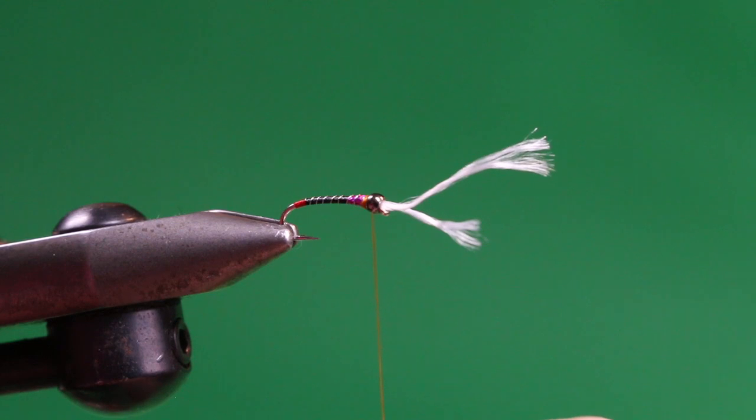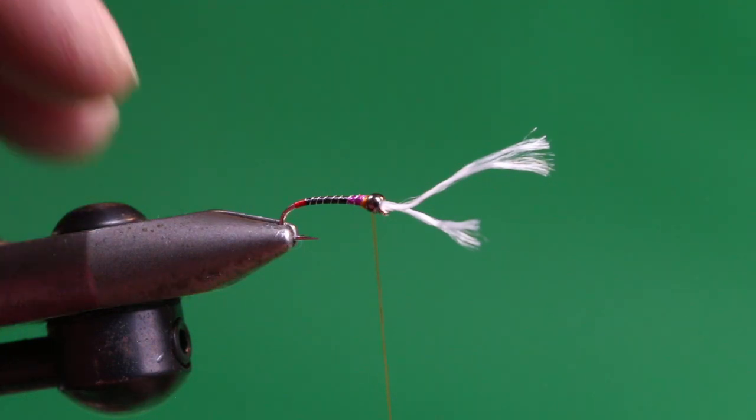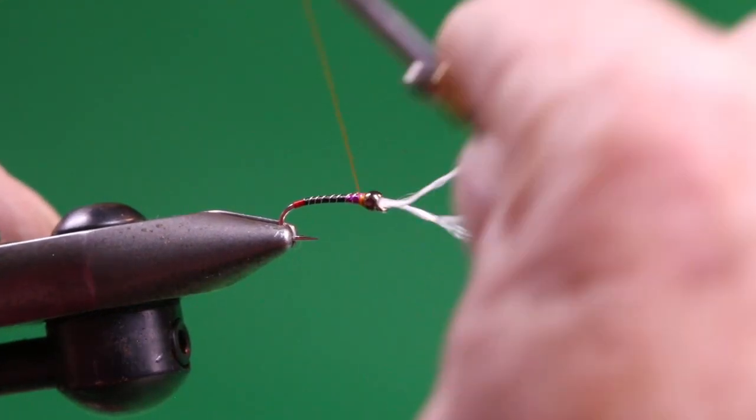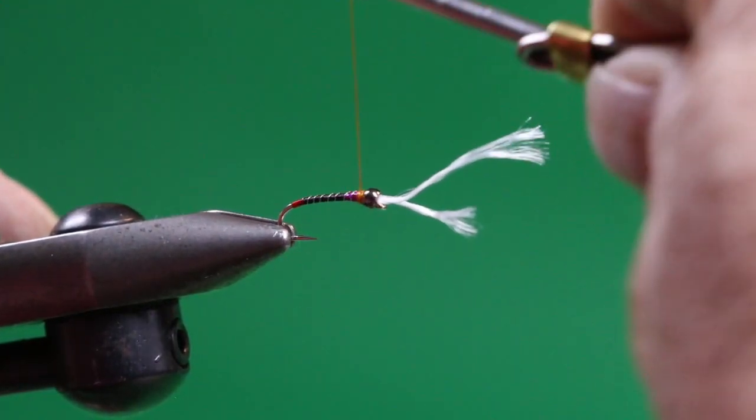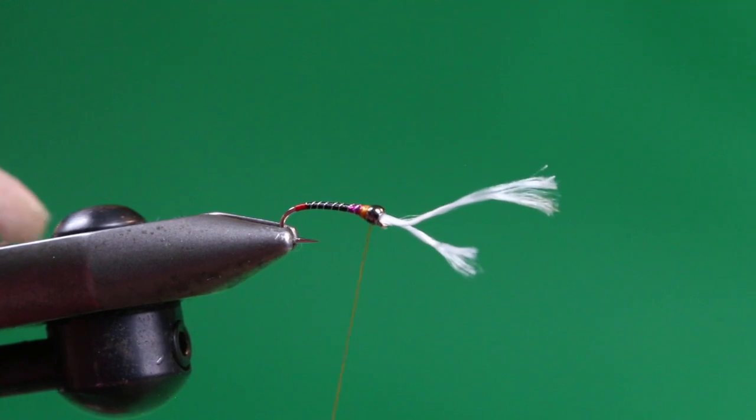So there's a couple of things we're going to do. We're going to build up a little burnt orange thorax to a second part of the thorax, in addition to the fuchsia, just to suggest the wing pad area. So we're just going to pull down, I've given that a spin, and we're just going to build up a very thin band of this burnt orange thread directly behind the bead.